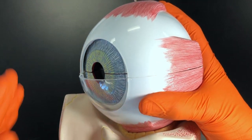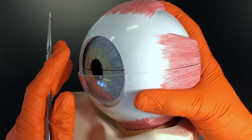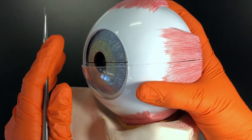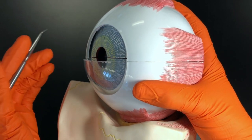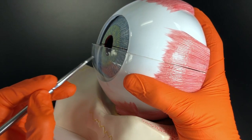The eye is made up of three layers called tunics: the fibrous tunic, the vascular tunic, and the nervous tunic. Let's start with the fibrous tunic, which is made up of the sclera and the cornea.